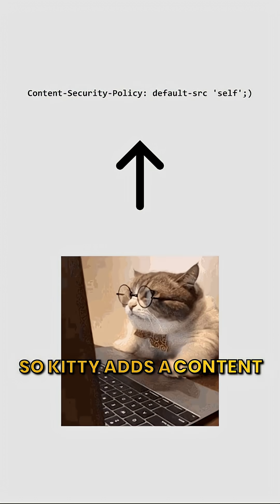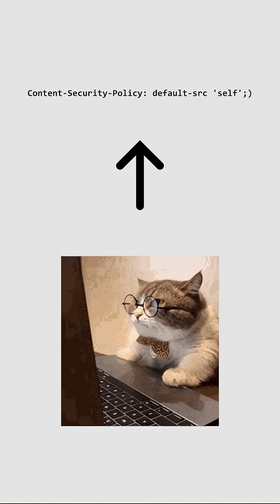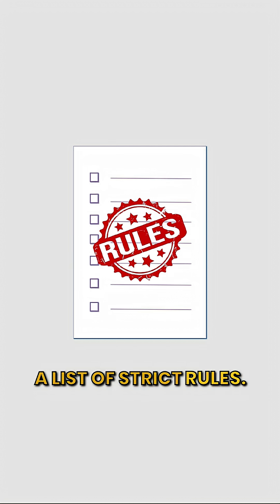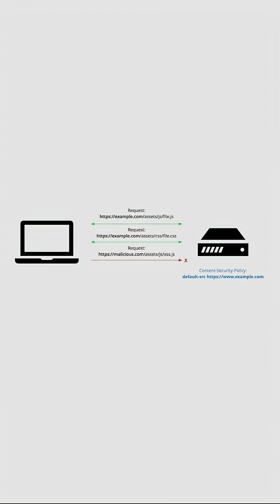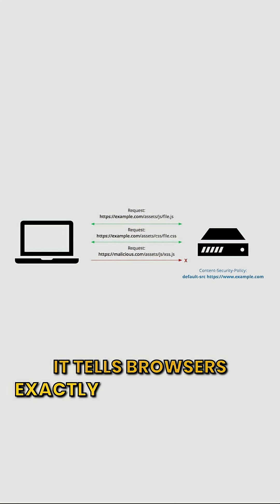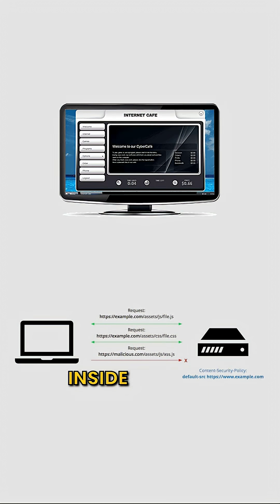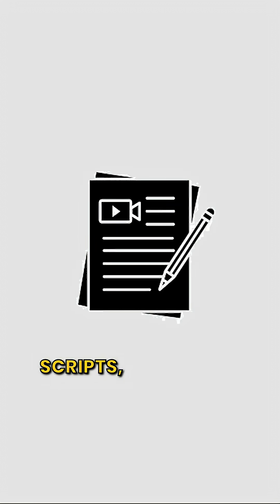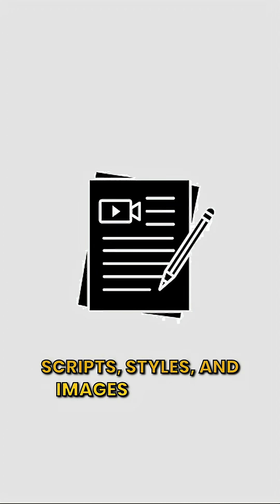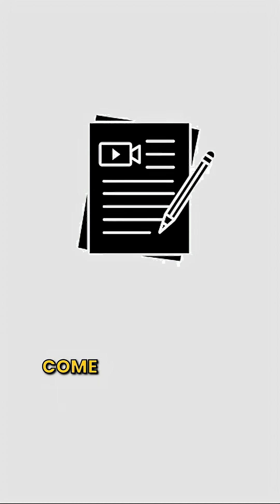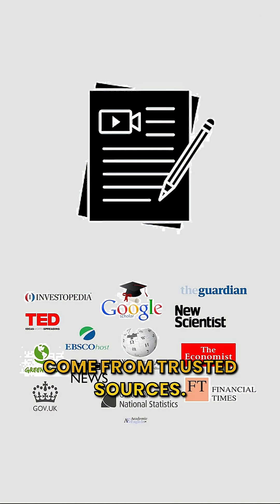So Kitty adds a content security policy header — a list of strict rules. It tells browsers exactly what's allowed inside her site. Scripts, styles, and images can only come from trusted sources.